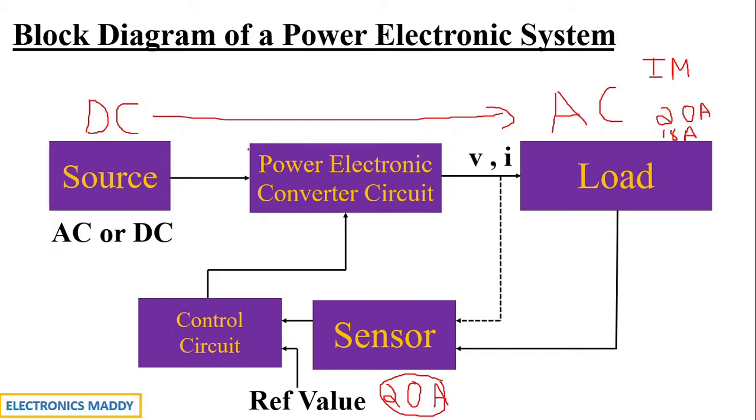And based on that, the power electronic converter circuit will change its voltage or current depending upon the parameter that we have actually sensed.